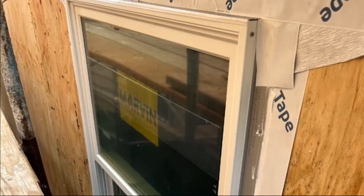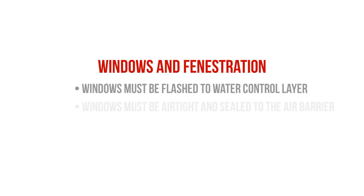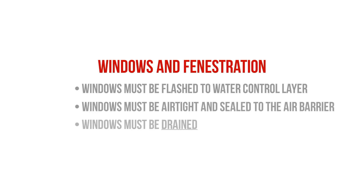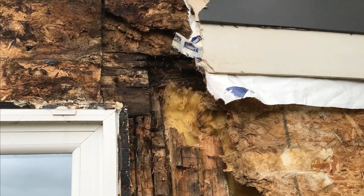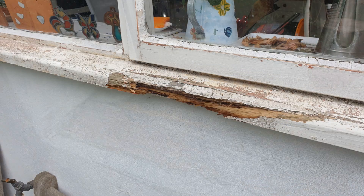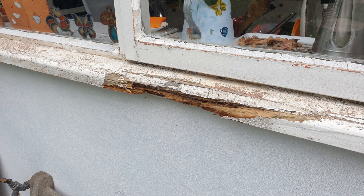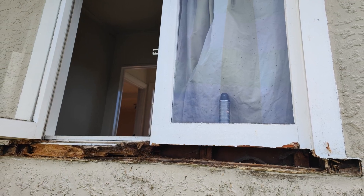It's windows. Windows are literal holes in your building. They need to be flashed to the weather-resistive barrier or the water control layer. They need to be airtight, and they need to be drained in the event that they leak. Windows tend to leak at the head or the top of the window, but all of the water ends up at the sill because of gravity, and so the majority of the deterioration that you'll see around windows will be at the sill since water will be trying to find a path out of the assembly.